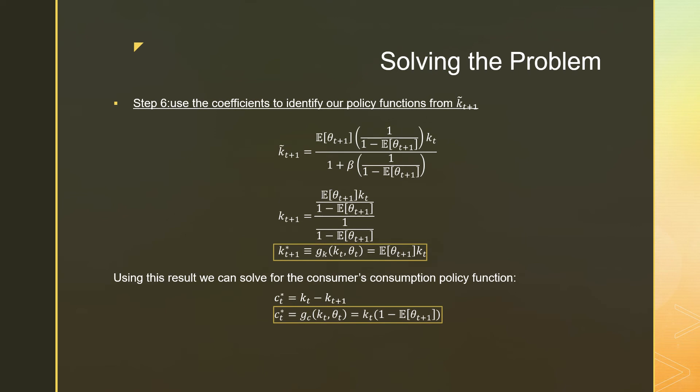So step number six is that we're going to use our coefficients to identify our policy functions from K_{t+1} tilde, this theoretical maximum, and we're just going to run the algebra. And we see that we get our policy functions that, again, they look very similar to our deterministic case of our standard cake eating problem, just that instead of beta, we have this expectation of theta_{t+1}, meaning this uncertain future discount term.